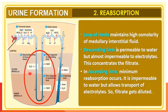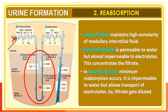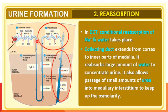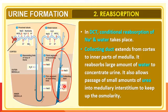The loop of Henle maintains the high osmolarity of the medullary interstitial fluid. The descending limb is permeable to water but almost impermeable to electrolytes, causing a concentrated filtrate. In the ascending limb, minimum reabsorption occurs; it is impermeable to water but allows transport of electrolytes, so the filtrate gets diluted. In the DCT, conditional reabsorption of sodium and water takes place. The collecting duct reabsorbs large amounts of water to concentrate the urine and allows passage of urea to the medullary interstitium to maintain osmolarity.